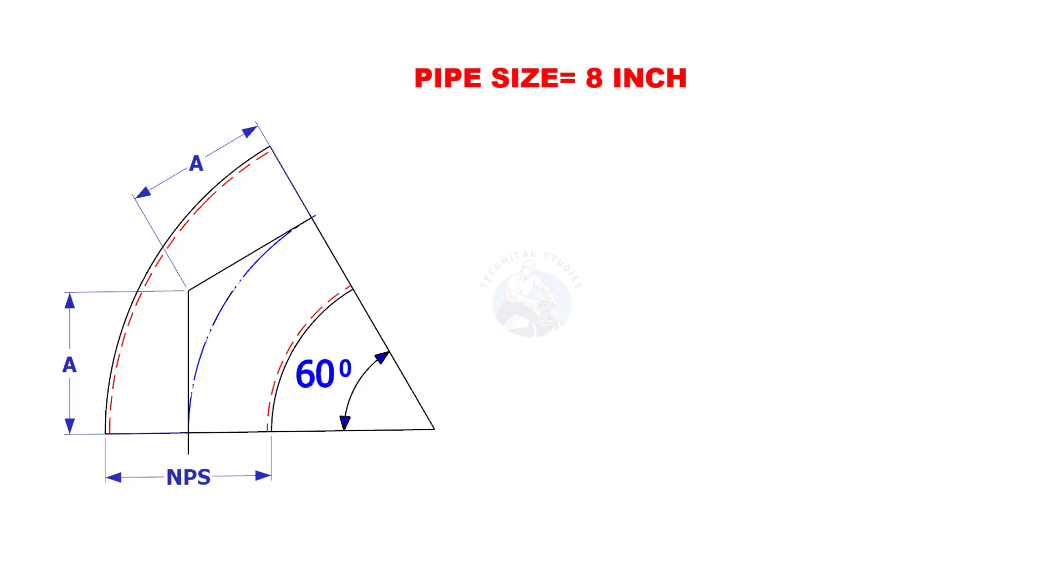This time the pipe size is 8 inches and the degree is 60. The constant for 60 degree is 22. Multiply 8 by 22. The answer is 176 millimeters.